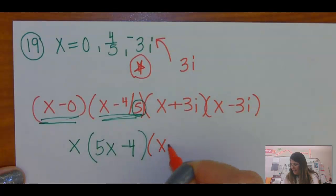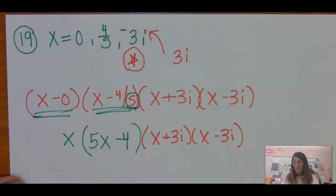And then you have this x plus 3i, x minus 3i. And I'm going to multiply all of this out. These guys are going to be the ones you want to do first.